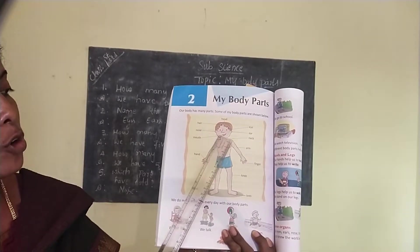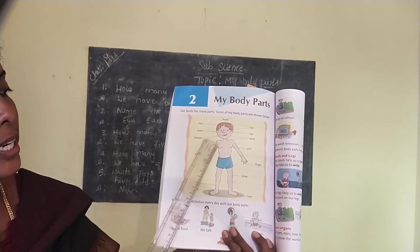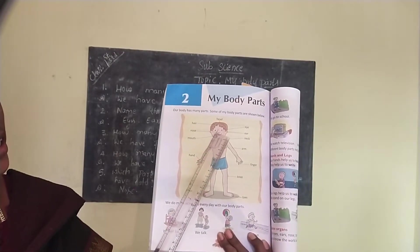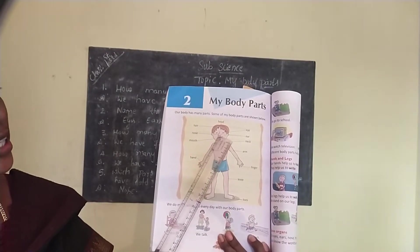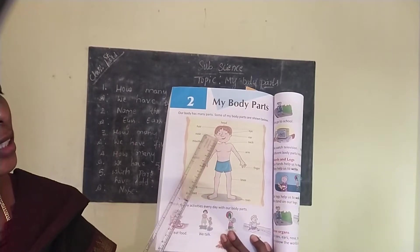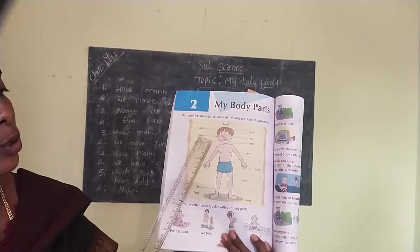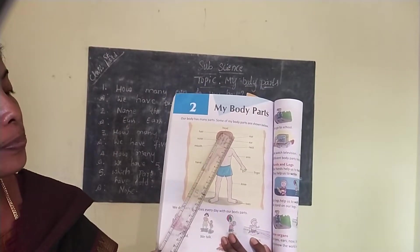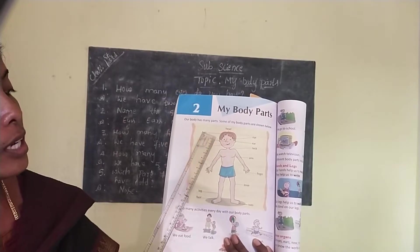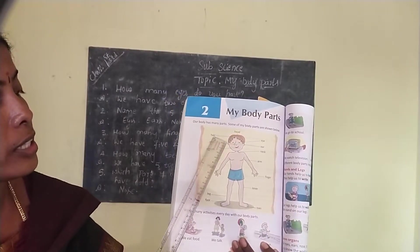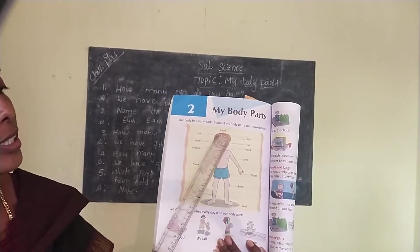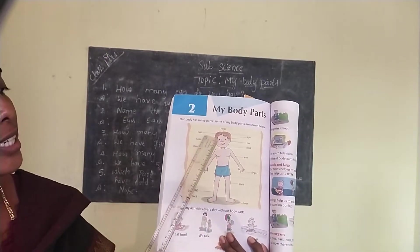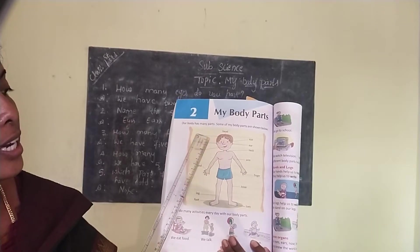Mouth. M-O-U-T-H. Mouth. Look here children, which part is this? Yes, nose. N-O-S-E. Nose. Here, it is hair. H-A-I-R. Hair.